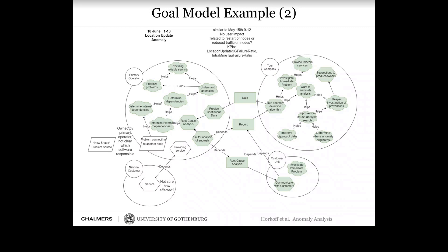For specific example anomalies, we expanded these models to go deeper into the who and the why. In one particular example, the primary operator was providing service to a national customer, but an internal problem connected to another node produced an anomaly noticed by the software center company. In this case, it wasn't really clear how the service was actually affected — there's still some uncertainty — but this helps draw out who's involved, what they depend on, and how they're potentially affected.